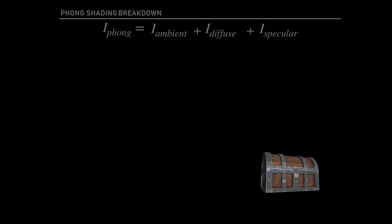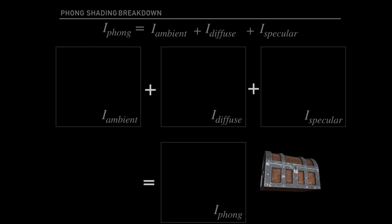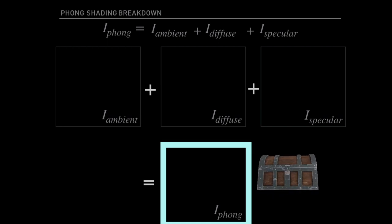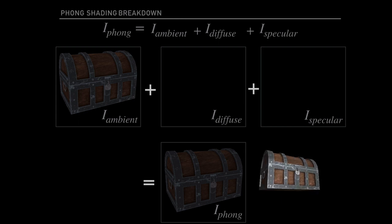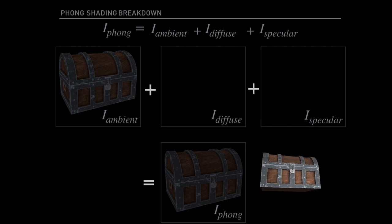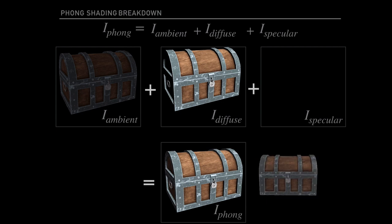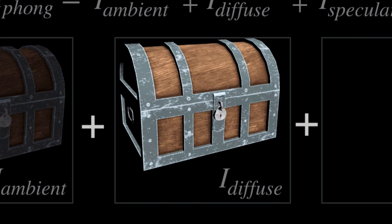Let's break down this Phong shading formula. Phong is made up of ambient, diffuse, and specular lighting values — all added together summed up to make Phong. Ambient is going to be basically the environmental lighting; most often in this technique it's going to be the backs of our objects, stuff that's not facing the light. When it comes to diffuse, that is the surface that is facing the light.